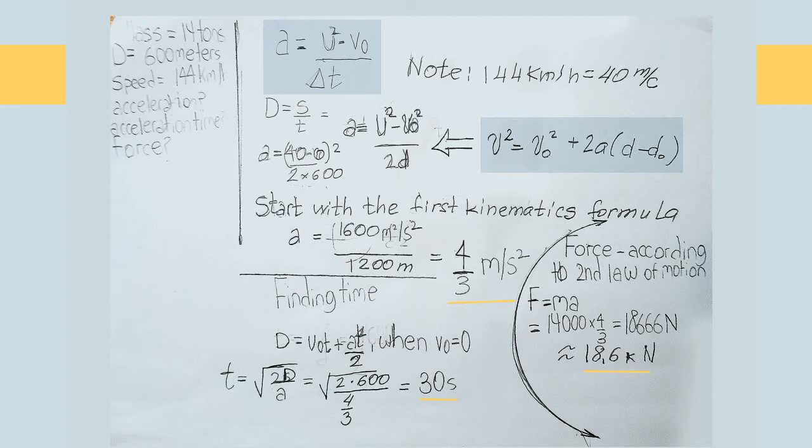Now let's find time. When initial velocity is equal to 0, we can use the formula: distance equals initial velocity times time plus acceleration times time squared divided by 2.